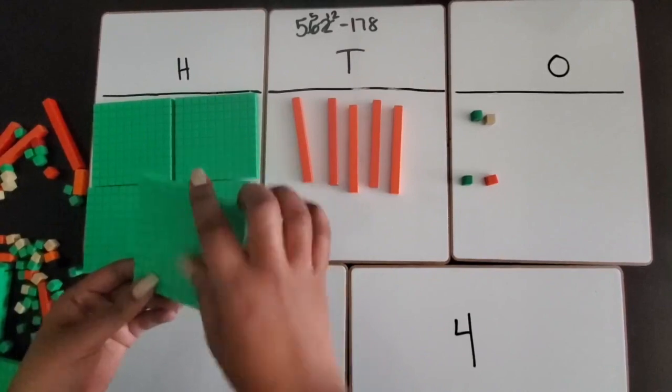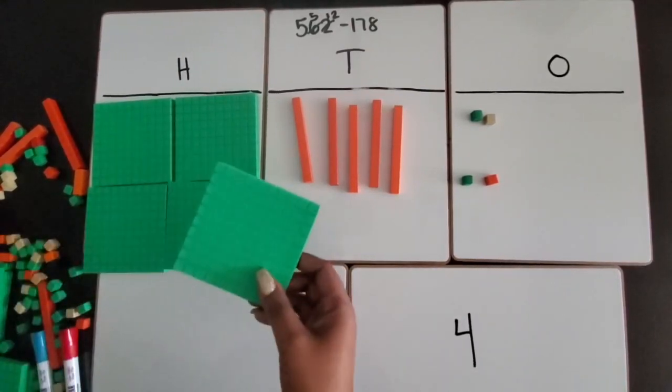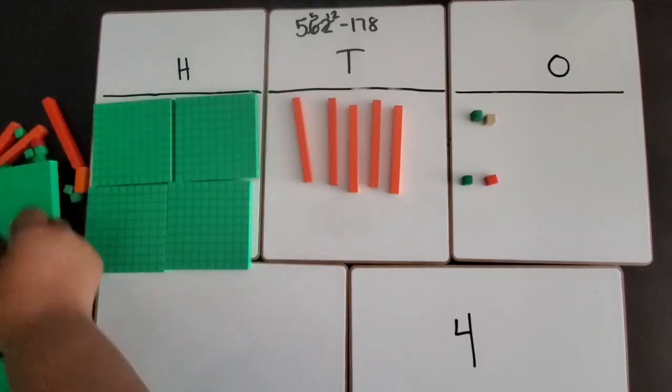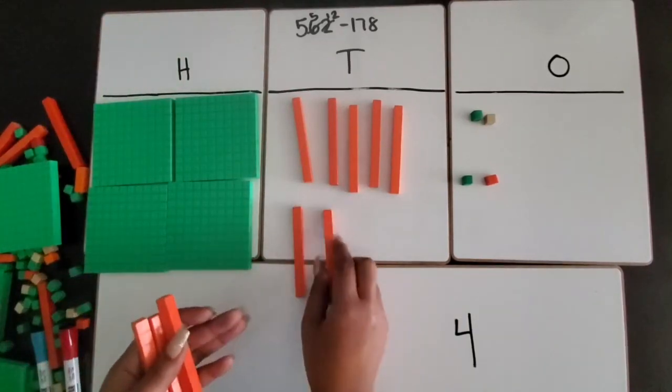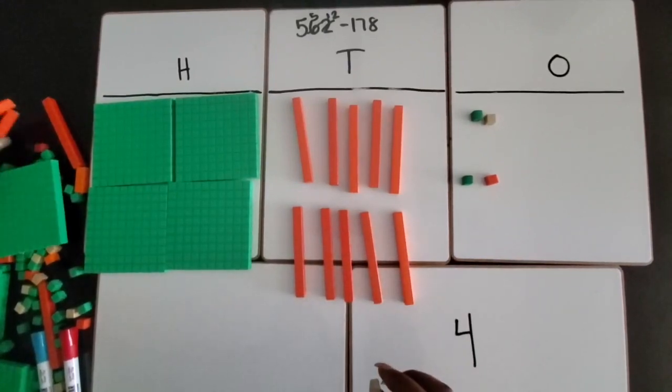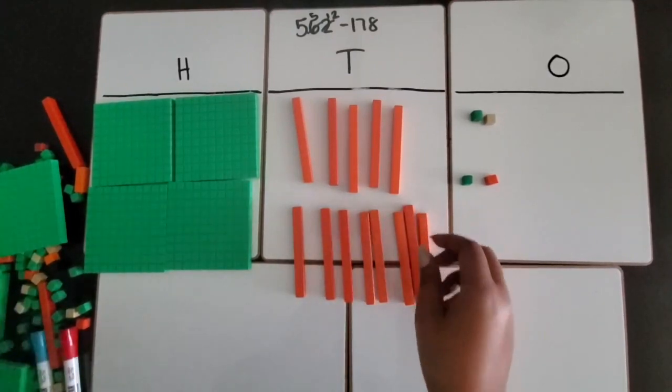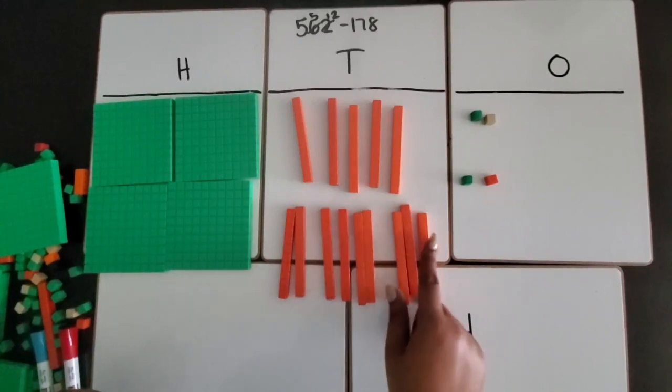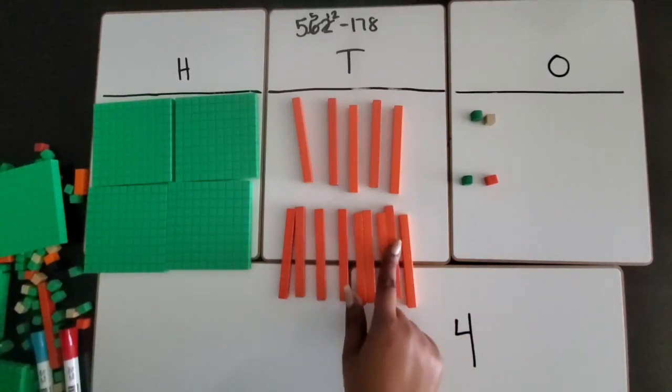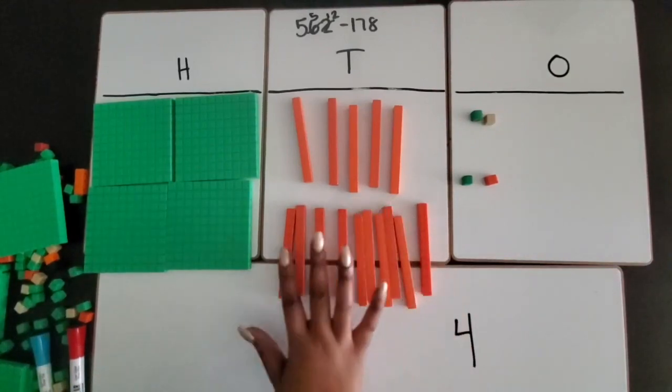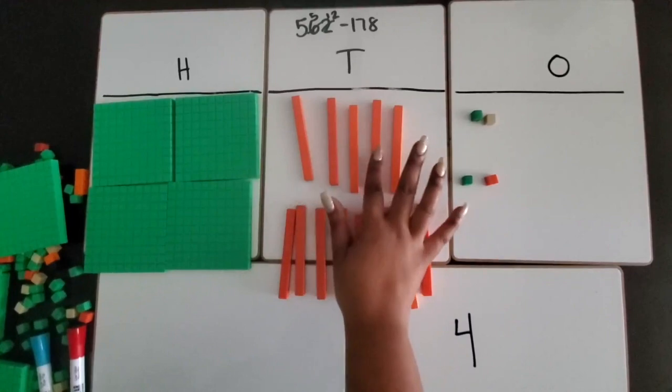A 100 flat is 10 of the rods, so I'm going to make a trade. I'm going to take this flat out and place in 10 of these rods because both amounts equal 100. One, two, three, four, five, six, seven, eight, nine, ten.